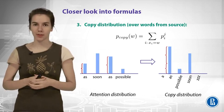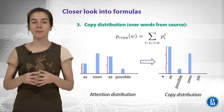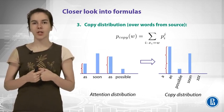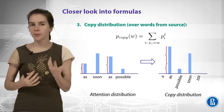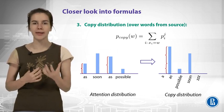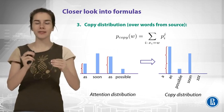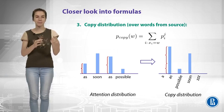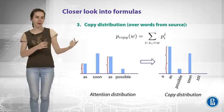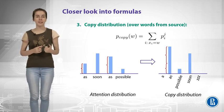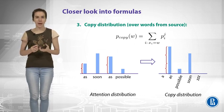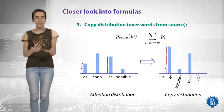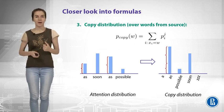How can we improve our model? We would want to have some copy distribution. This distribution should tell us that sometimes it is nice just to copy something from the input. We already have an attention distribution with probabilities over different moments in the input. What if we just sum them by word? For example, if we have seen the word 'S' two times in our input sequence, the probability of 'S' should be equal to the sum of those two. In this way, we get a distribution over words that occurred in our input.